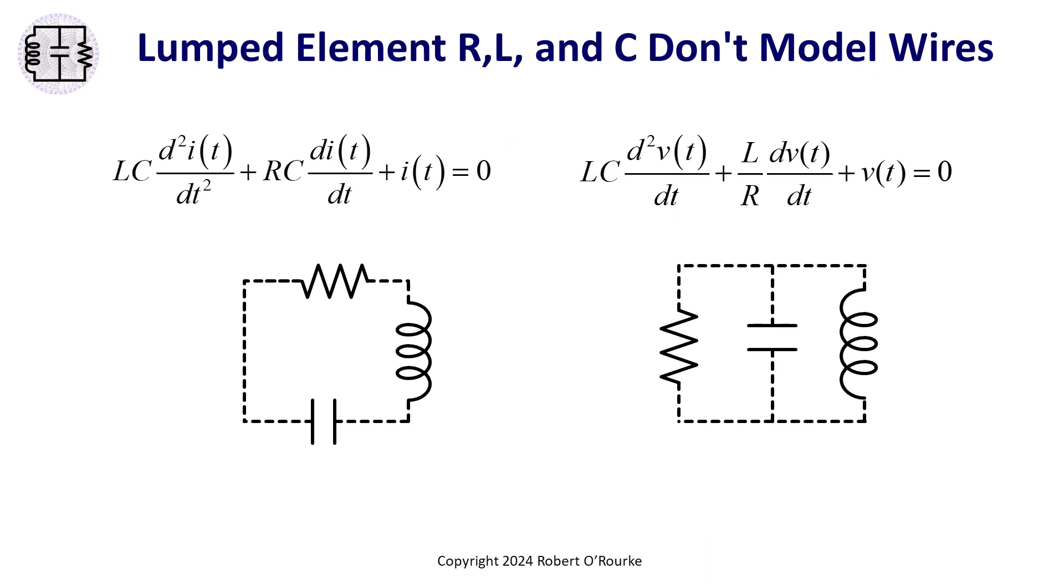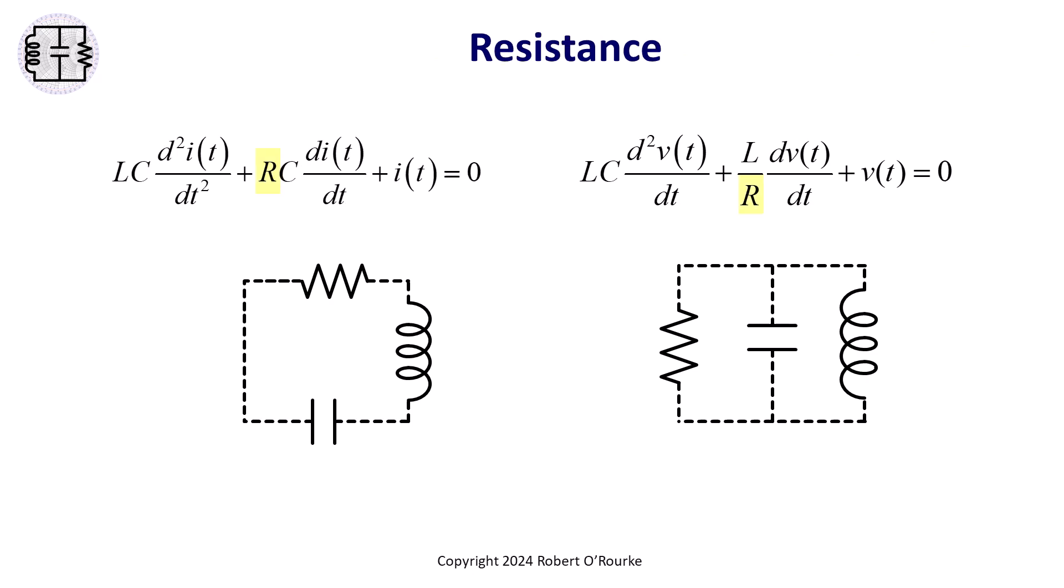Welcome. We know that ideal lumped element circuits have ideal wires that don't get modeled. Only the resistance, inductance, capacitance, voltage, and current appear in the differential equations, along with time.